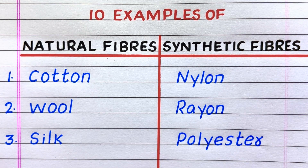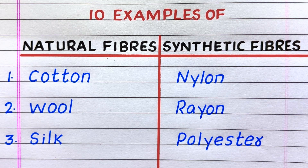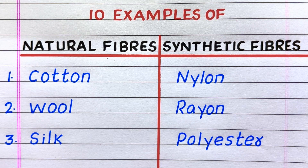First example of a natural fiber is cotton, second wool, third silk. First example of a synthetic fiber is nylon, second rayon, third polyester.